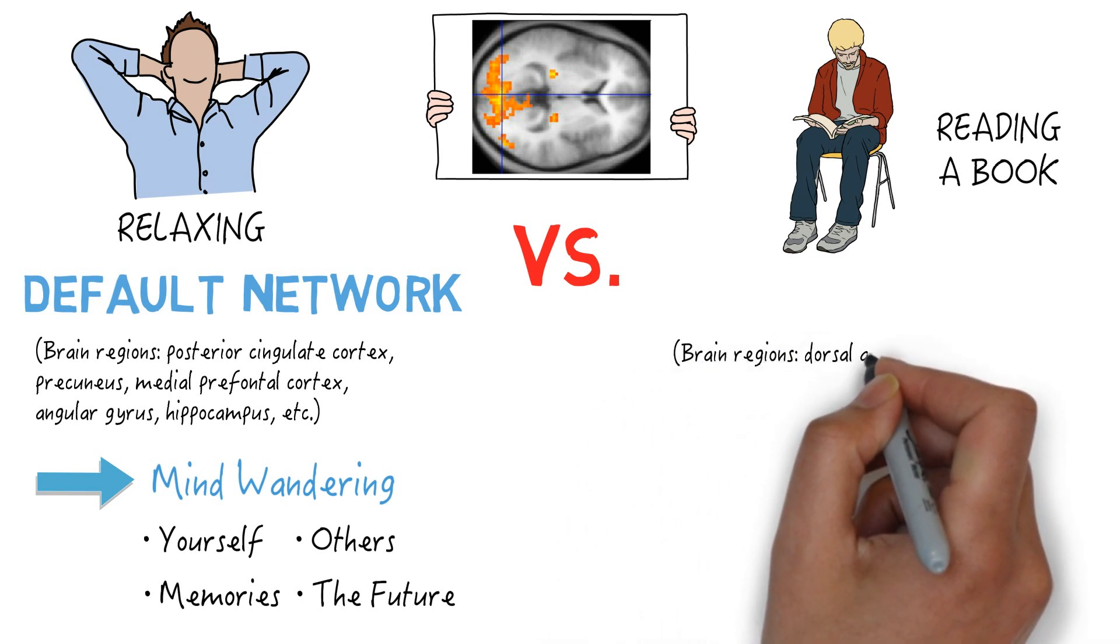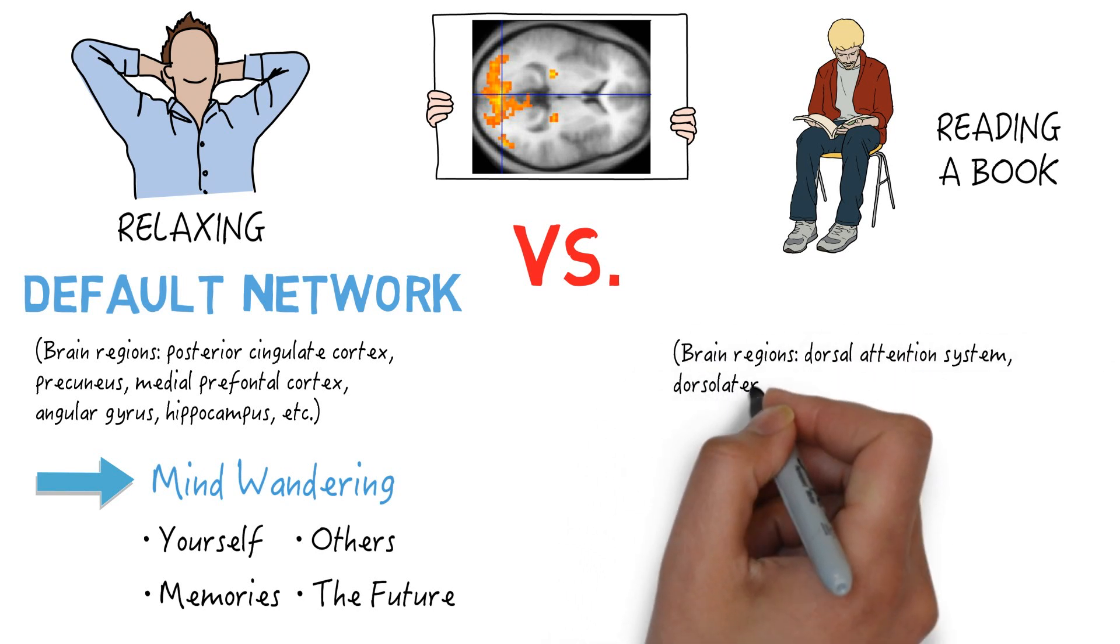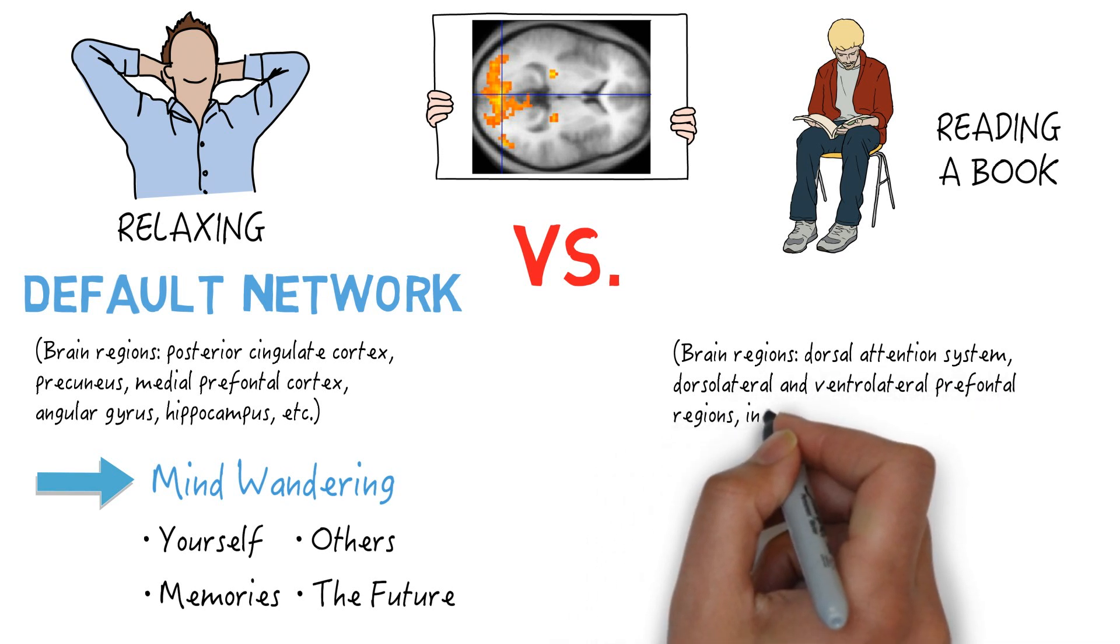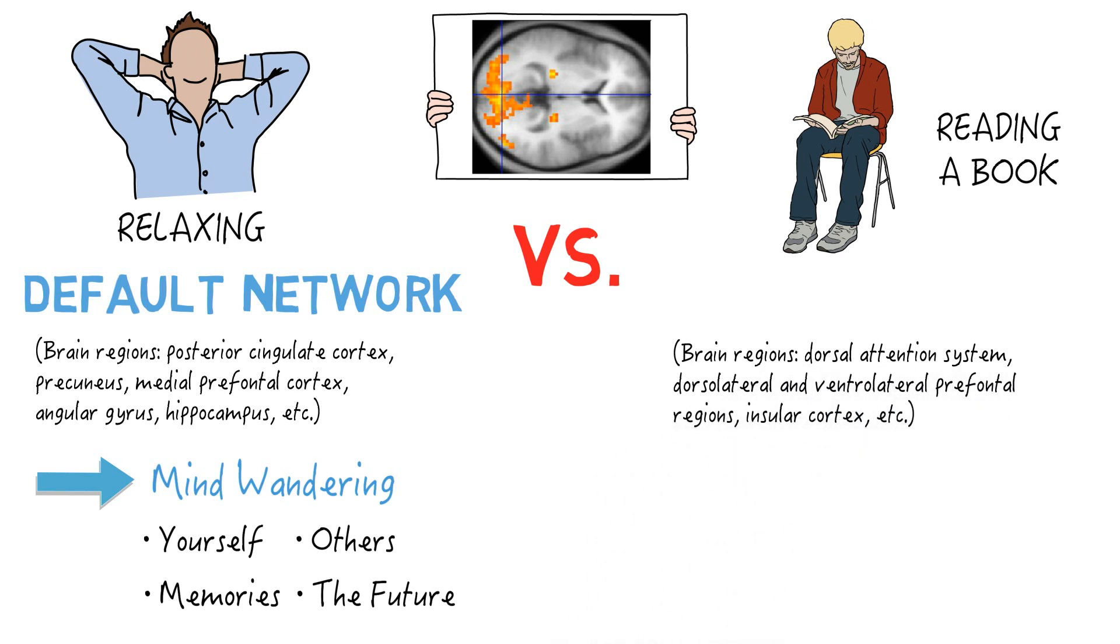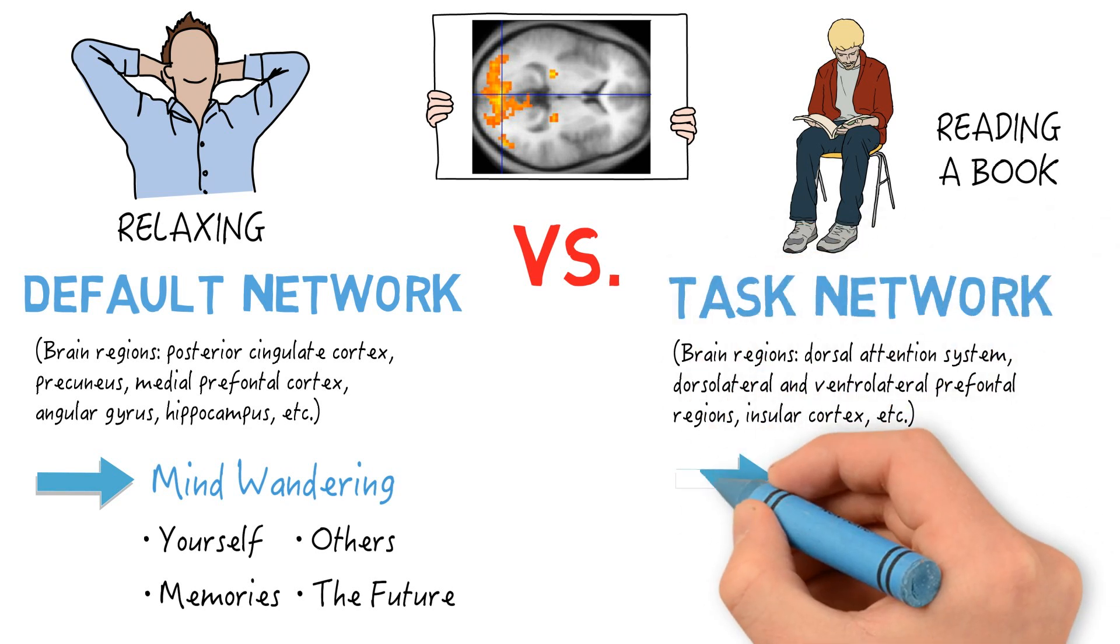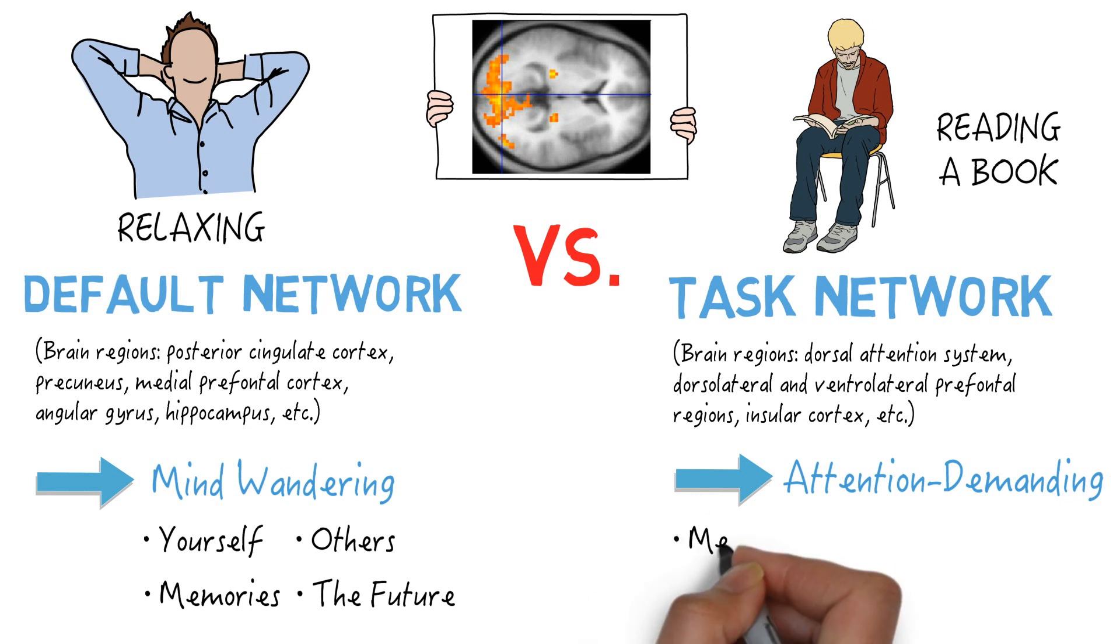There's another set of brain regions that seem to be working harder during reading or performing any other mental task than during relaxation. And that is the task network, responsible for attention-demanding activities such as mental arithmetic and reading.